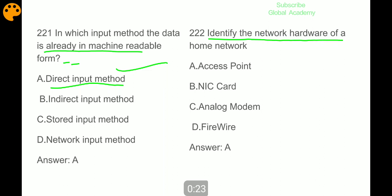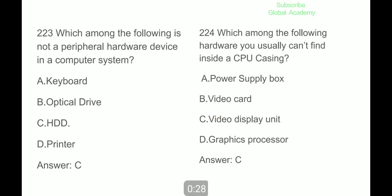Which among the following is not a peripheral hardware device in a computer system? HDD hard disk drive. Which among the following hardware you usually can't find inside a CPU casing? Video display unit.